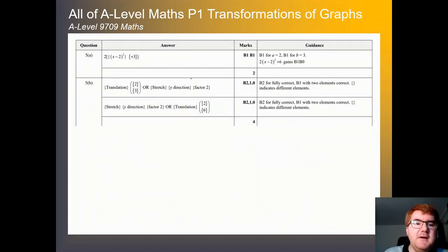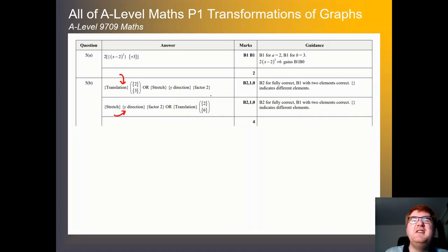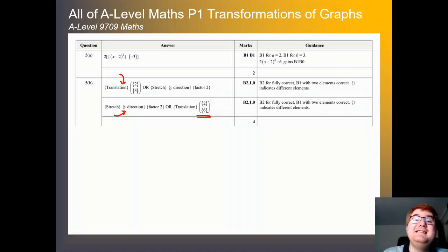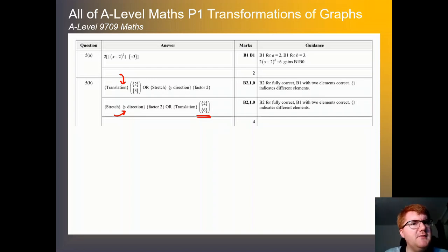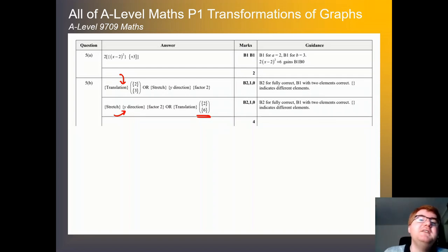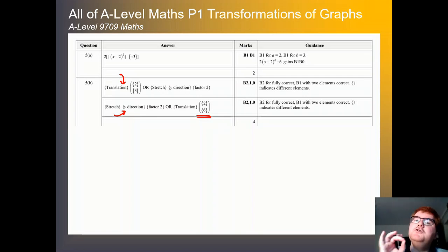Now we deal with the 2 outside — it's a y direction process, so we've got a stretch in the y direction with factor 2. Note the other 2 inside the bracket would give a factor of a half, so you need to know your transformations really well. The mark scheme shows taking the translation first and then the stretch. If you do it the other way around you have to expand out first. If you want to recap equations of circles, check out the video in front of you — we'll see you next time.